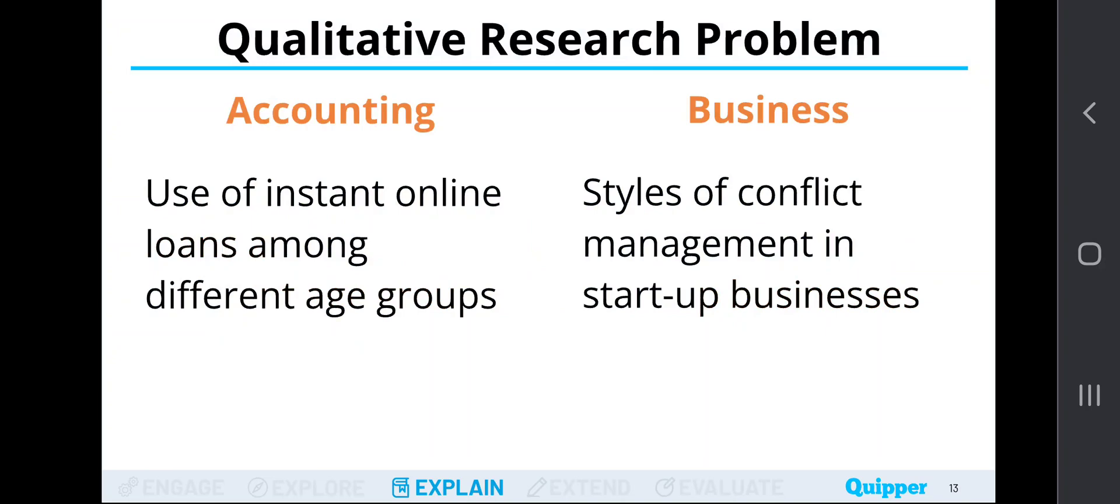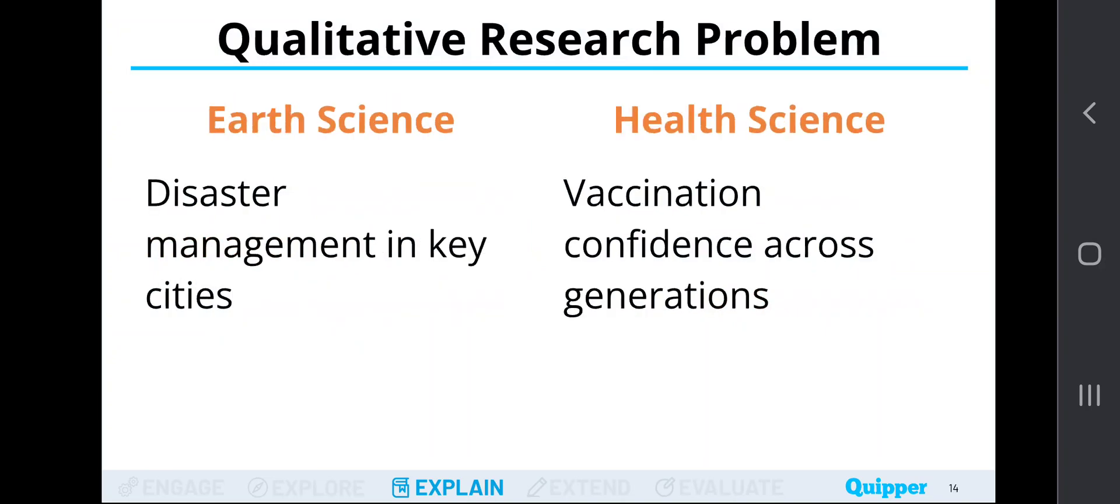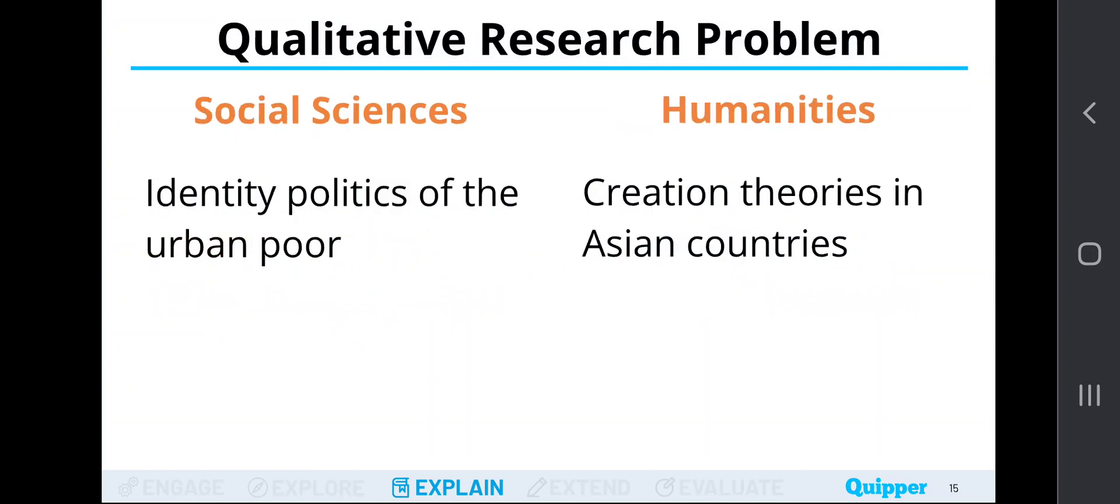Examples. When we are going to talk about accounting, one of your qualitative research problems could be the use of instant online loans among different age groups for business styles of conflict management in startup businesses. If you can observe, there is no need for numerical information, rather we can get our answers or we can get the problems, the research problems, out of non-numerical information. Earth science. Disaster management in key cities. Health science. Vaccination confidence across generations. Social sciences. Identity politics of the urban poor. Humanities. Creation theories in Asian countries.